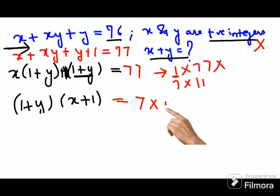So next is 7 × 11. So here I can say 1 + y = 7 and 1 + x = 11.